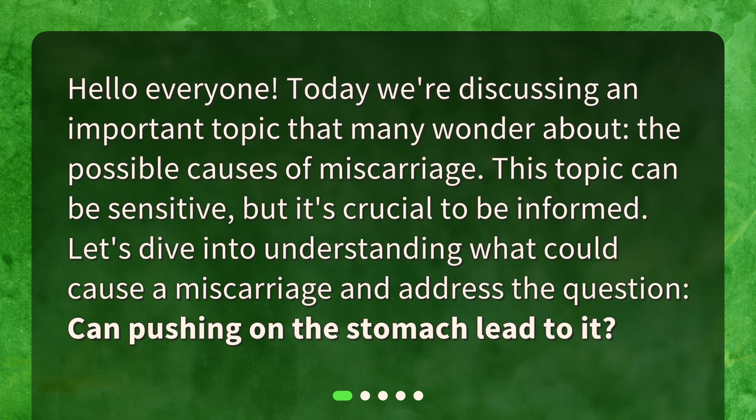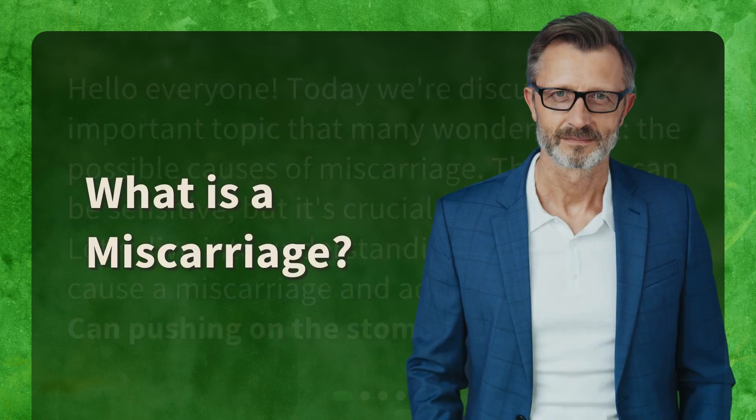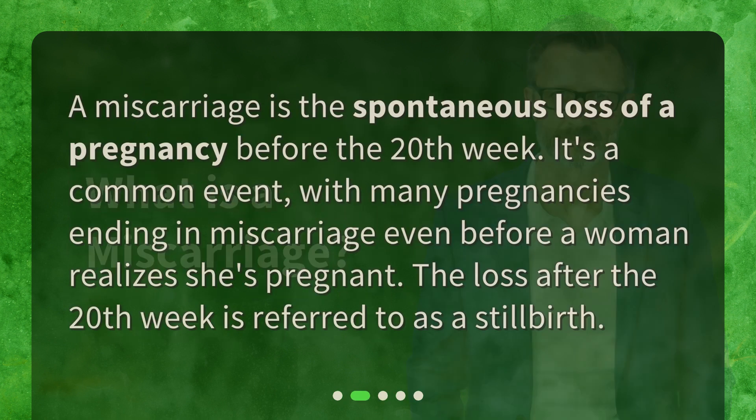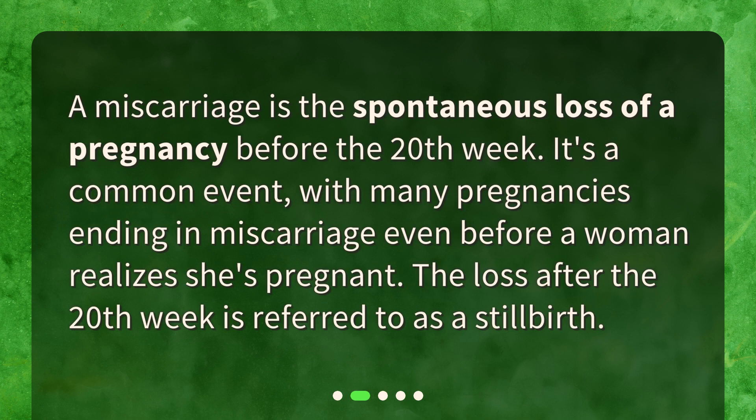What is a miscarriage? A miscarriage is the spontaneous loss of a pregnancy before the 20th week. It's a common event, with many pregnancies ending in miscarriage even before a woman realizes she's pregnant.